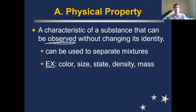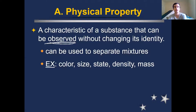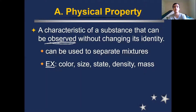The state that something is in is its physical property. So if you have an ice cube, it is a solid; a cup of water is a liquid; and water in the air around you is a gas. The temperature at which water changes state is also a physical property — it changes between solid and liquid at zero degrees Celsius, and between liquid and gas at one hundred degrees Celsius. How dense something is — how heavy it is based on its size — is also a physical property.